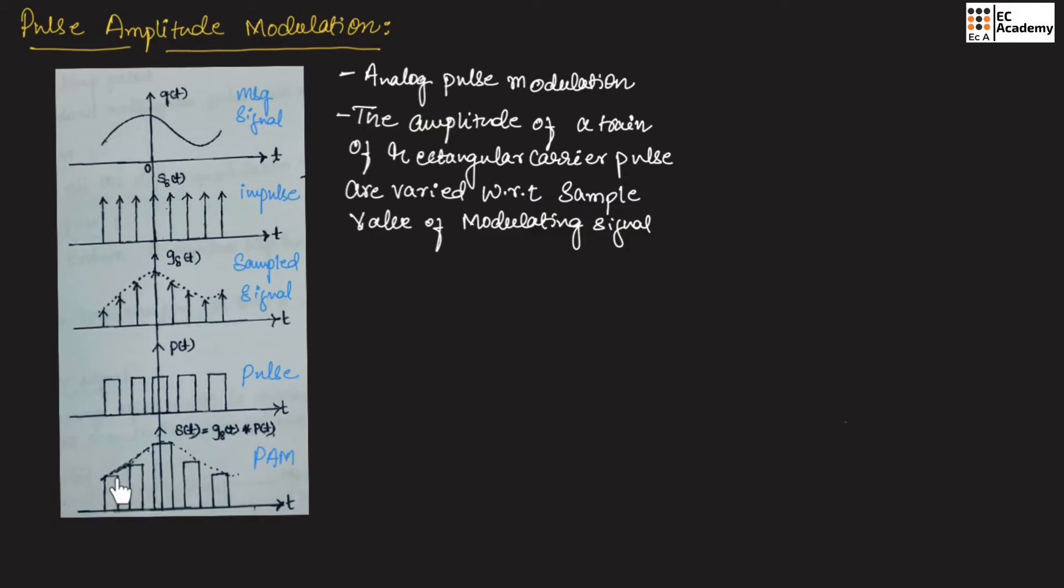In PAM signal, the top of each rectangular pulse is maintained flat. That's why it is also known as flat top sampling.